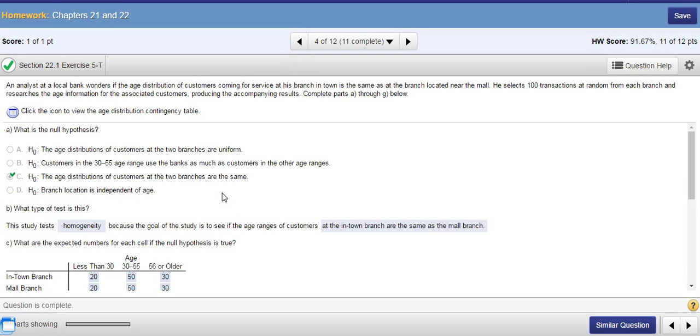So this is how you do the chi-square test for homogeneity in StatCrunch. So I hope it helps a little bit. And thank you for watching. And see you next time.